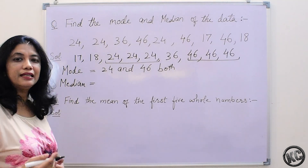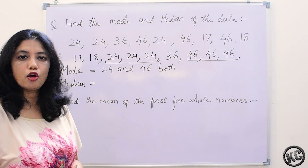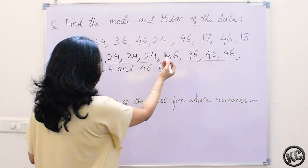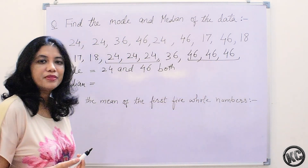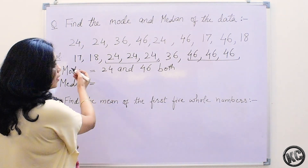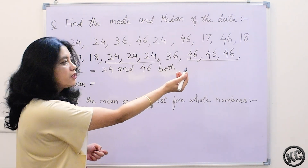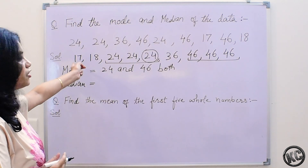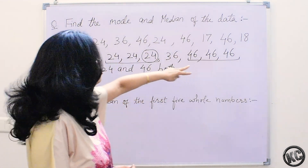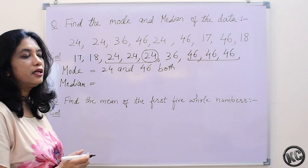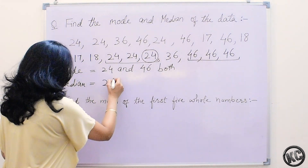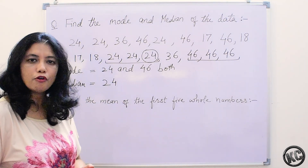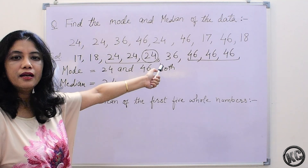Now let us find the median. Median is the middle observation. Here we have 9 observations, so we will leave 4 to one side and 4 observations to the other side. The middle observation is 24. So here median is 24. The observations are an odd number, so we could find the median in the data.